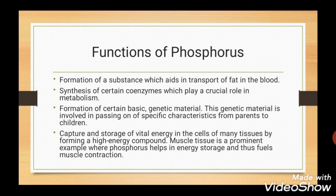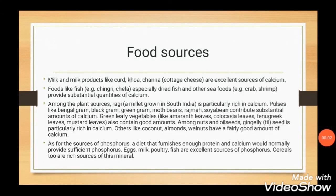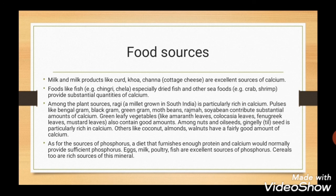Muscle tissue is a prominent example where phosphorus helps in energy storage and fuels muscle contraction. Food sources of calcium: milk and milk products like curd and cottage cheese are excellent sources. Fish, especially dried fish, and other seafoods provide substantial quantities of calcium. Some plant sources are ragi and pulses, which also provide substantial amounts. Green leafy vegetables also contain good amounts of calcium. Others like coconut, almonds and walnuts have a fairly good amount. Food sources of phosphorus: those foods which furnish enough protein and calcium would normally provide sufficient phosphorus. Other excellent sources are eggs, milk, poultry, fish and cereals.